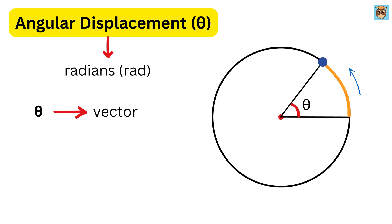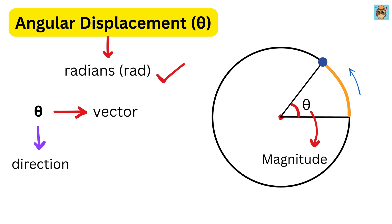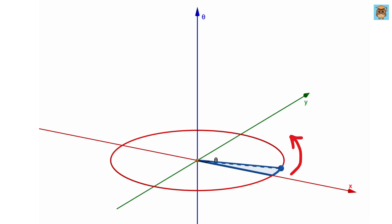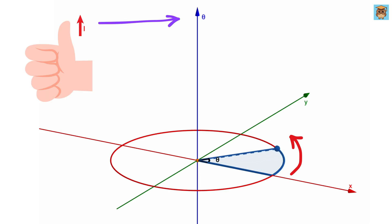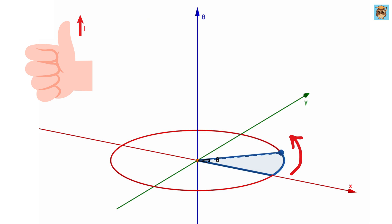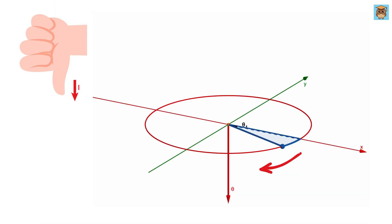Angular displacement is a vector — it has both magnitude (angle in radians) and direction. Its direction is given by the right-hand thumb rule: curl the fingers of your right hand in the direction of rotation, and the thumb points in the direction of the angular displacement vector, along the axis of rotation. If an object rotates counterclockwise when viewed from above, the vector points upward out of the page. For clockwise rotation, it points downward.